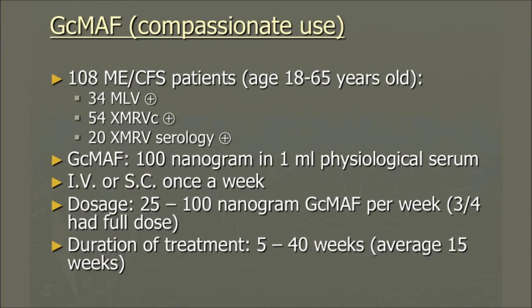There is discussion among researchers about what is the best route. What we do is give it IV the first time and see how people react, but then patients administer it themselves with an insulin needle and syringe. The dosage depends on how activated the immune system is and what kind of responder they are genetically. For low responders with low complement activation, we risk giving 100 nanograms; otherwise we give a much lower dose. About three-quarters of this first group had the full dose. The duration of treatment was 5 to 40 weeks, with an average of 15 weeks.